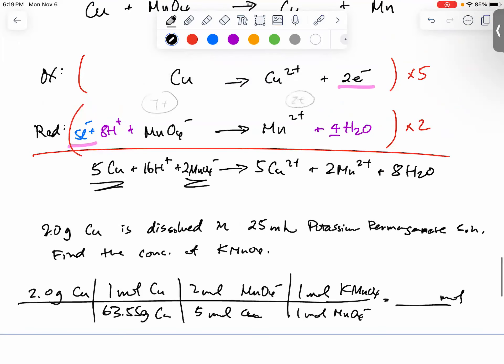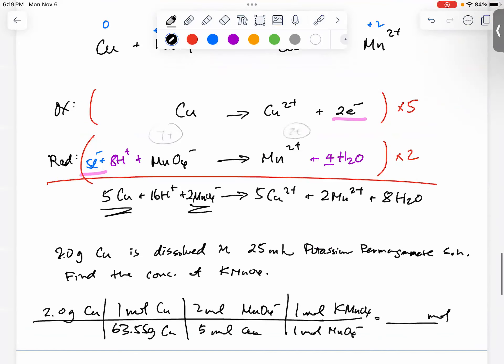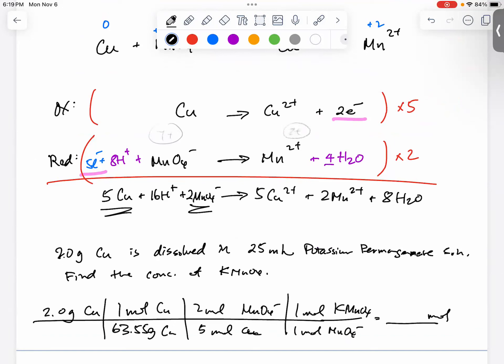Are we good? So that's really what the stoichiometry is all about in the context of reduction oxidation reaction. If you know how to label them, label the oxidation numbers, it's going to be straightforward.